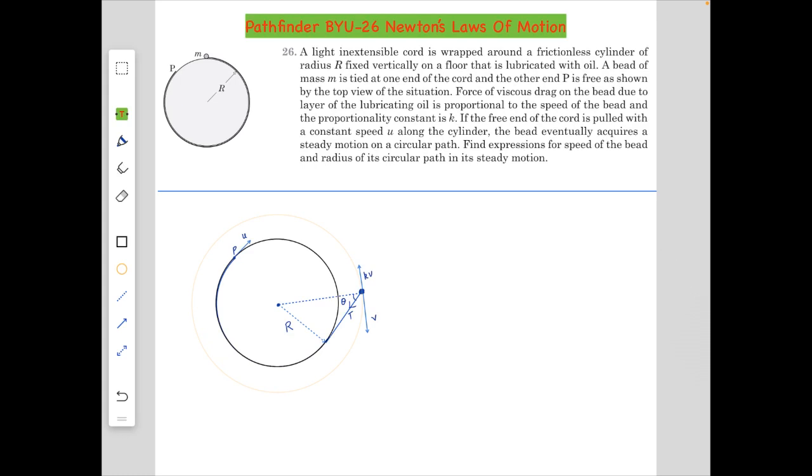Force of viscous drag on the bead due to the layer of the lubricating oil is proportional to the speed of the bead and the proportionality constant is k. If the free end of the cord is pulled with a constant speed u along the cylinder, the bead eventually acquires a steady motion on a circular path. Find expressions for the speed of the bead and the radius of its circular path in its steady motion.